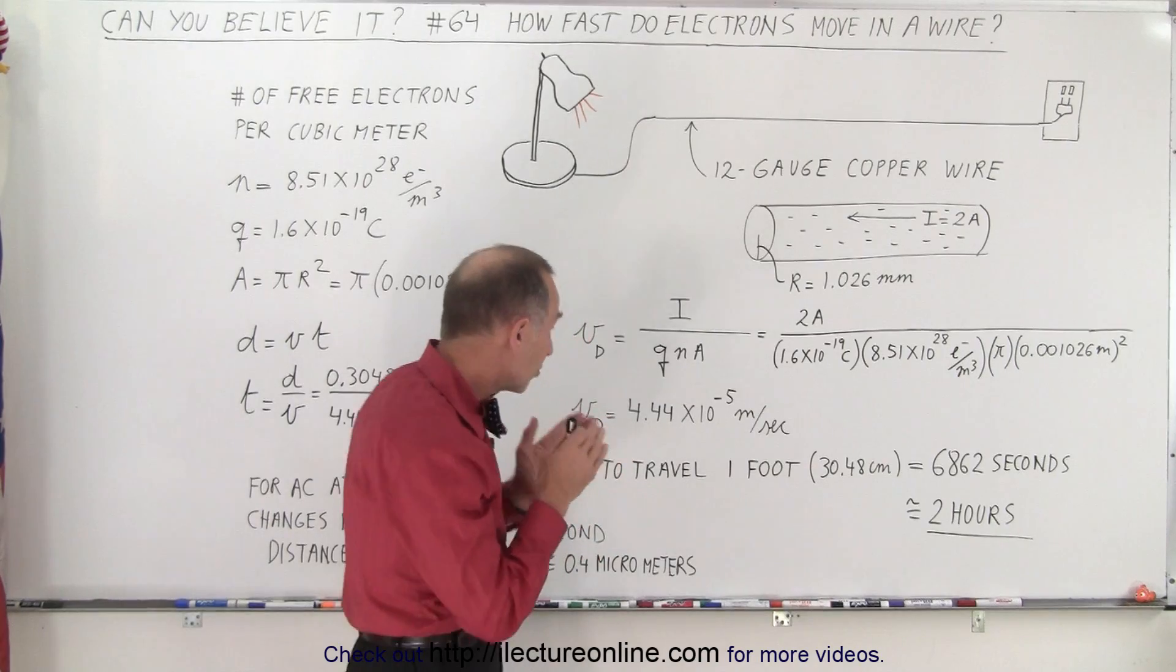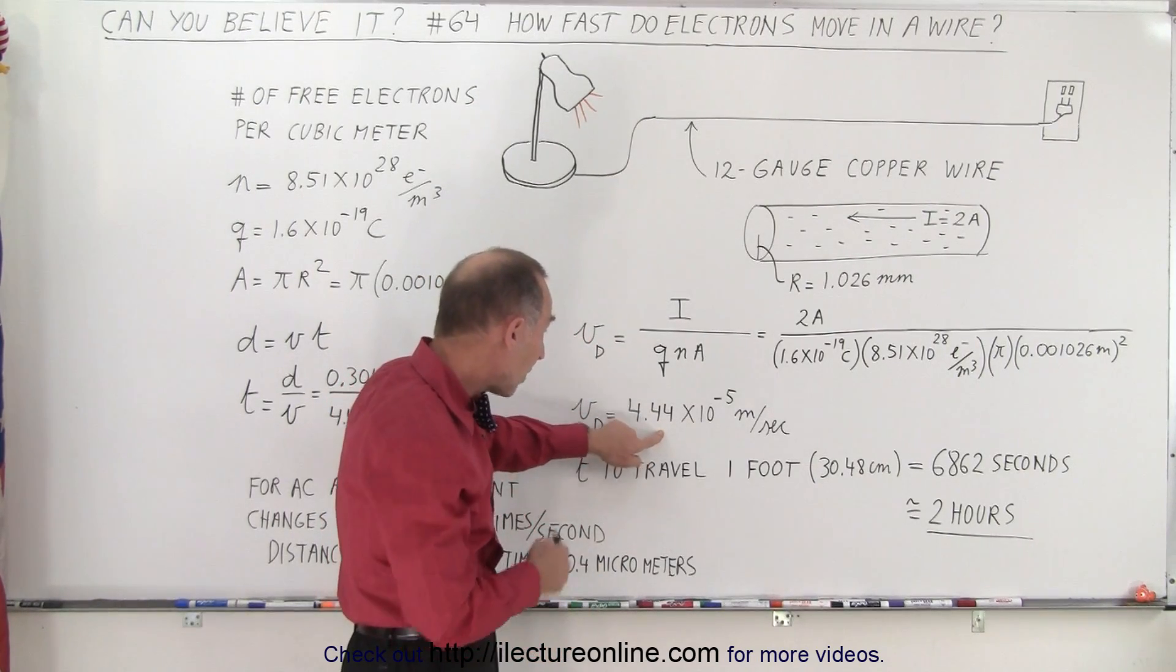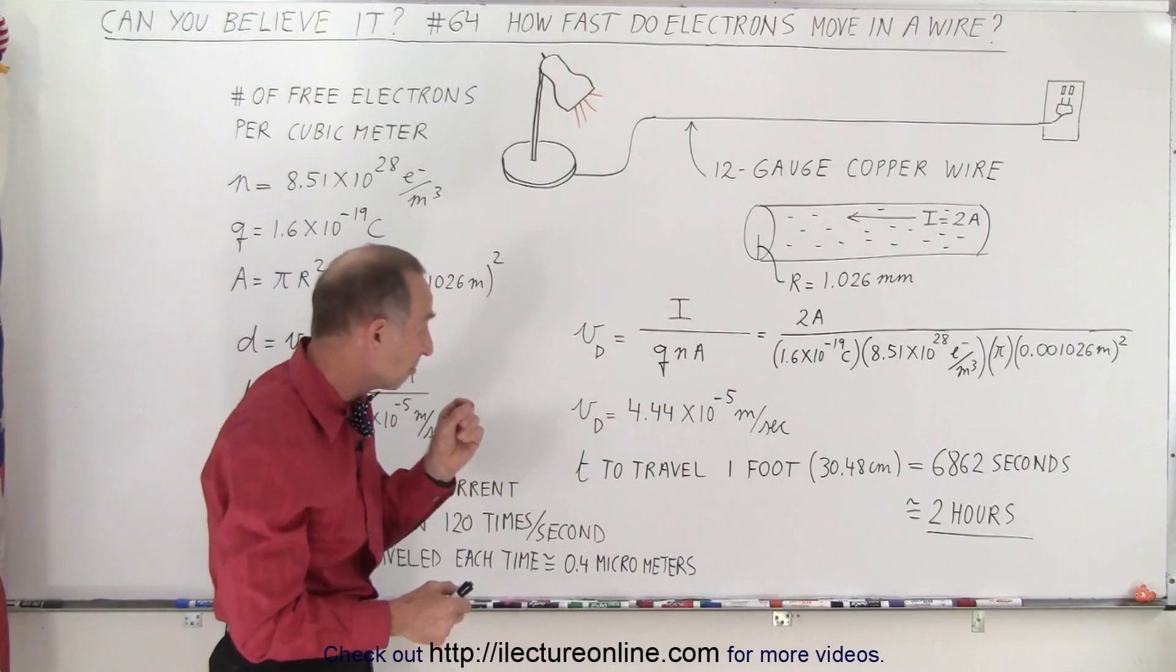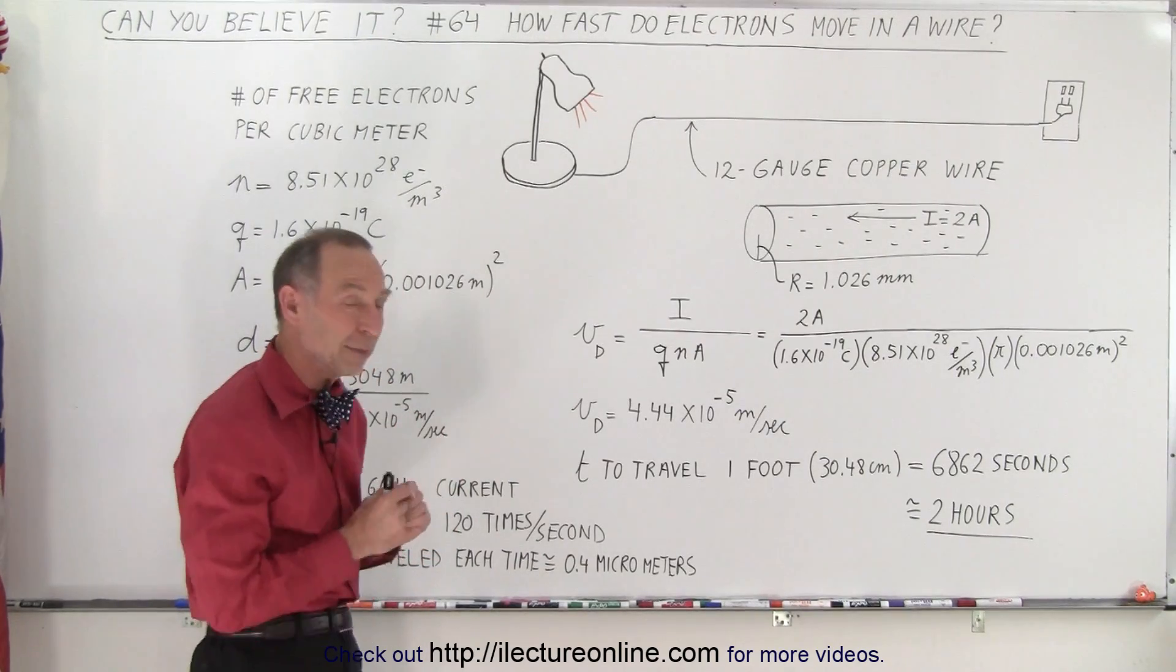When we put it all together, it turns out that the speed at which the electrons travel through the wire is only about 4.44×10⁻⁵ meters per second. That is less than a millimeter per second, a small fraction of a millimeter.